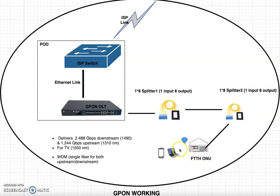This GPON technology is responsible for delivering 2.48 Gbps of downstream using the wavelength of 1490 nm, and 1.244 Gbps upstream using the wavelength of 1310 nm. Since it uses Wavelength Division Multiplexing (WDM), a single fiber can be used for both upstream and downstream purposes.